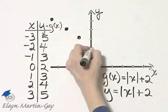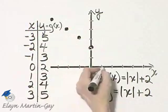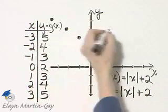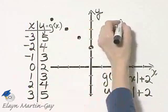At 0, 2. At 1, I go up to 3 again. 2, 4. And 3, 5.